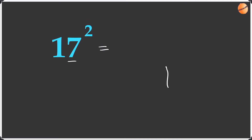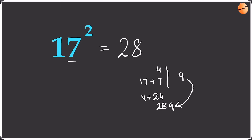Now let's try 17 squared a bit quicker. Square the unit: 7 squared is 49, write the 9, take the 4 as remainder. Difference: 17 minus 10 is 7. Add to original: 17 plus 7 is 24. Times by 1: 24. Add the remainder 4: gives 28. Bring the 9 over — the answer is 289.